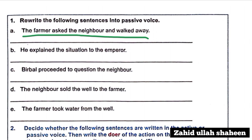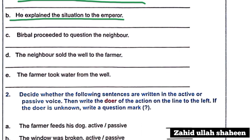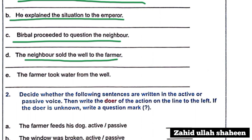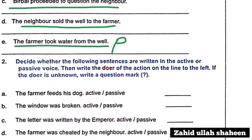'He explained the situation to the emperor' becomes 'The situation was explained to the emperor by him.' 'The neighbor sold the well to the farmer' becomes 'The well was sold to the farmer by the neighbor.' 'The farmer took water from the well' becomes 'The water was taken from the well by the farmer.' We decide whether the following sentences are written in active or passive voice.